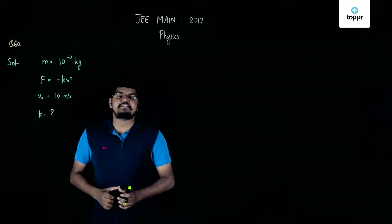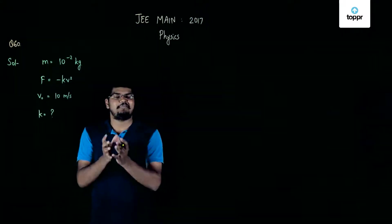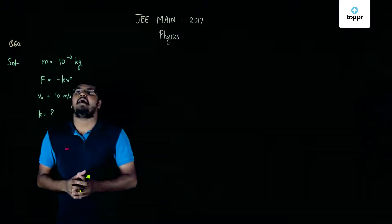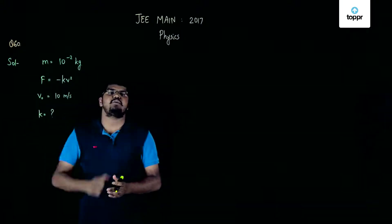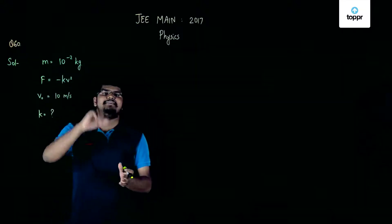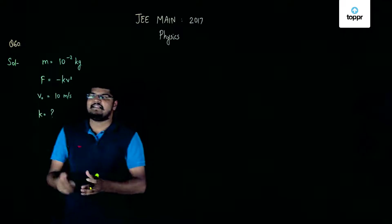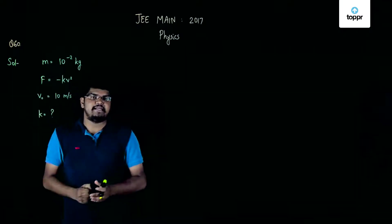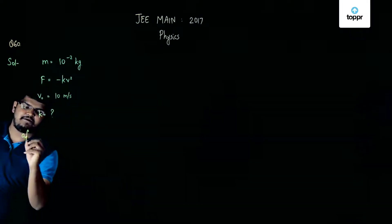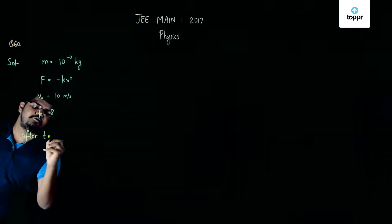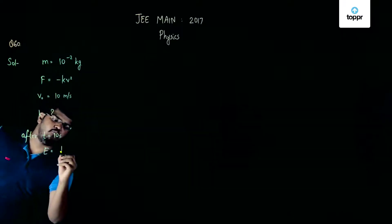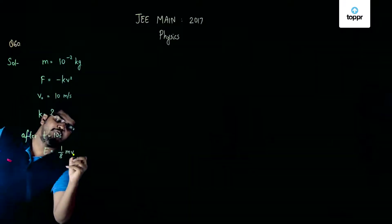Hi guys, let's now discuss the solution of question number 60 of Set D physics. In this question we've been given a mass of 10⁻² kg, and this mass is experiencing a frictional force of -kv². We've also been given that its initial speed is 10 m/s, and after t = 10 seconds its energy is equal to (1/8)mv₀².